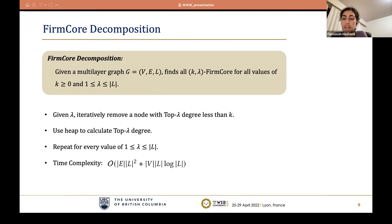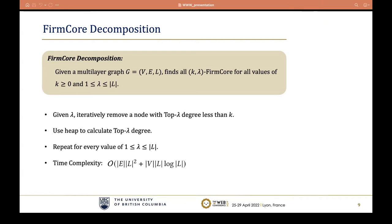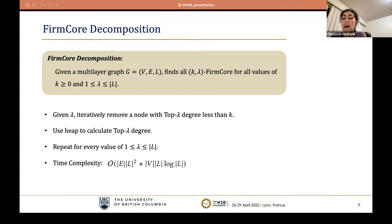In the firm core decomposition, we want to find all non-empty firm cores. Given the value of lambda, we iteratively remove a node with top-lambda degree less than k. Since we need to calculate and keep the top-lambda degree updated during the algorithm, we use a heap data structure. By repeating this process for all possible values of lambda, we can find all non-empty firm cores of G. Since each run for a value of lambda is independent, we can take advantage of multiprocessor programming.